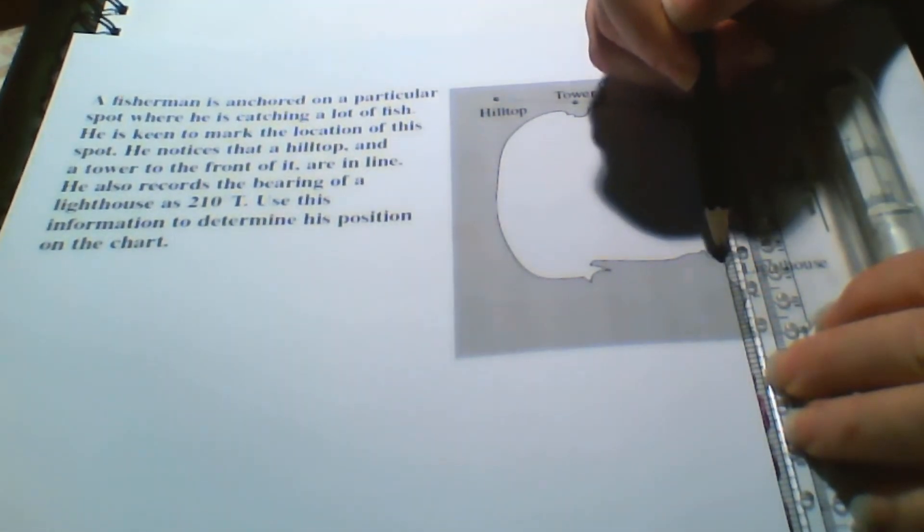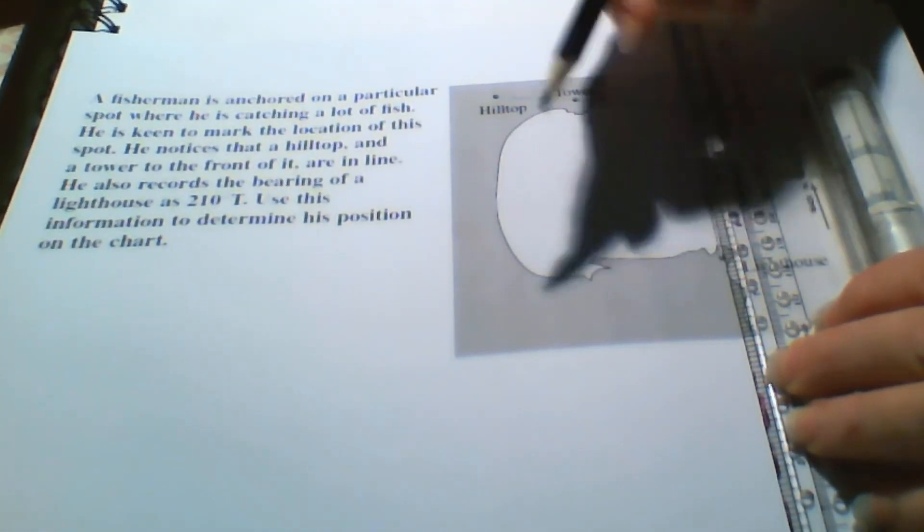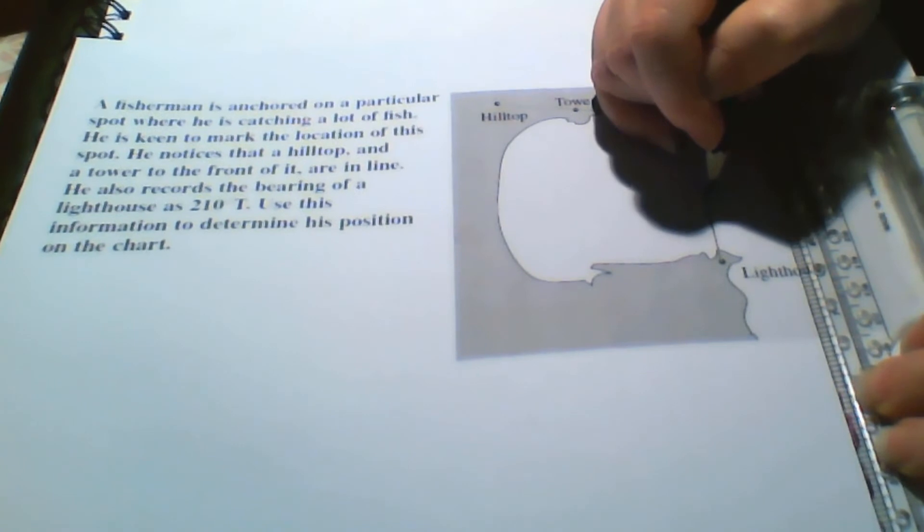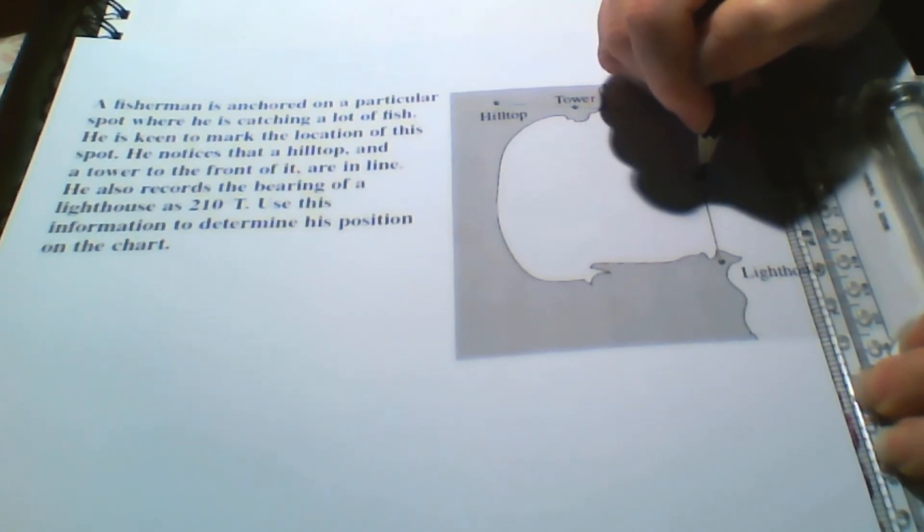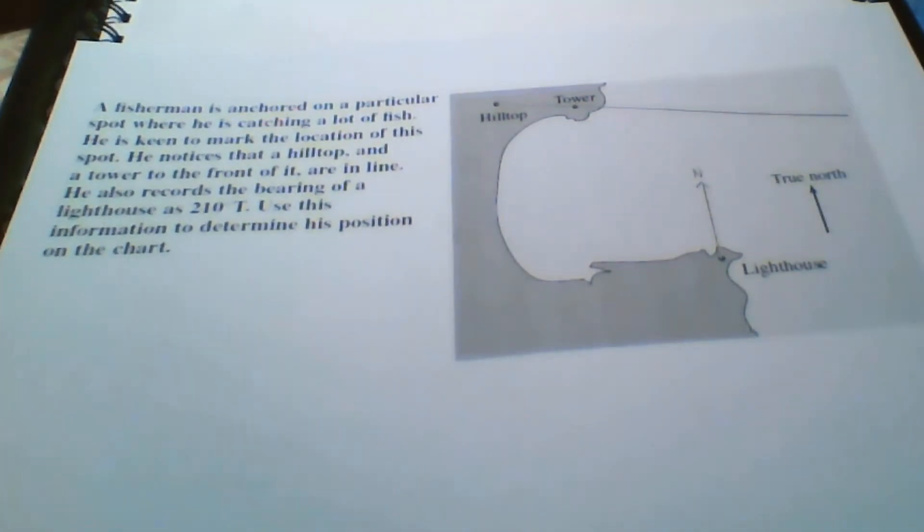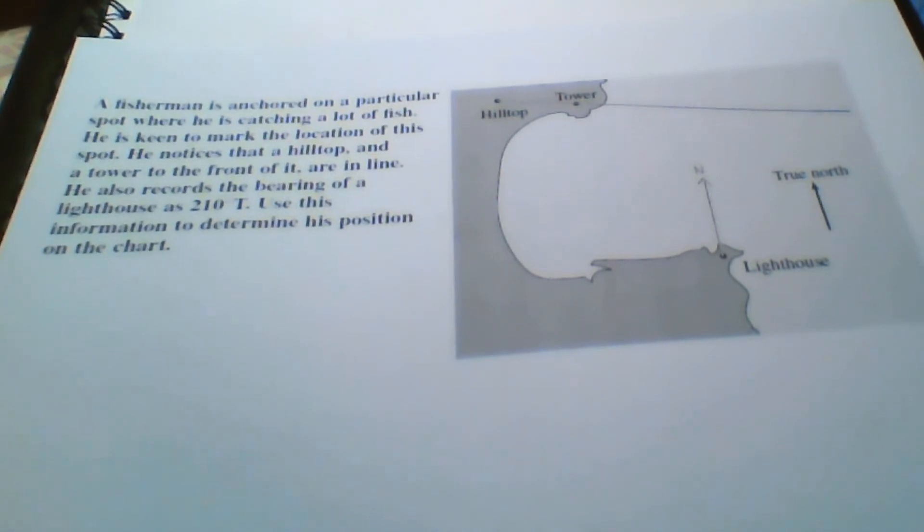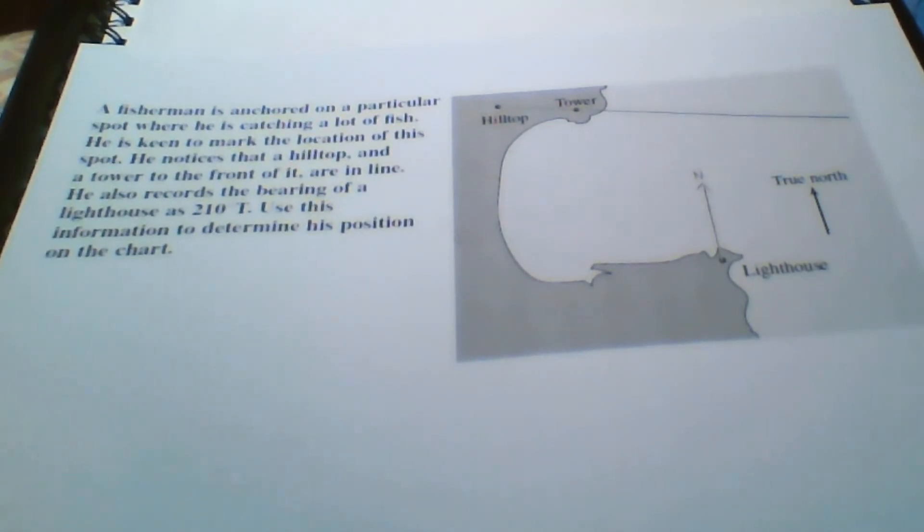So just moving the north over, making sure it's perfectly straight. Now the back bearing will be the 210 degrees true minus the 180, that's how we do our back bearing. So 30 degrees from the lighthouse out is where the boat is. That's our back bearing.